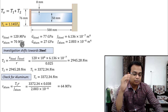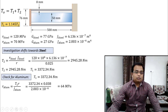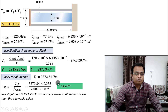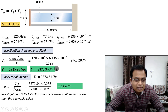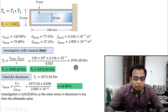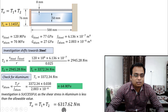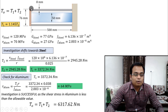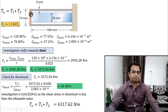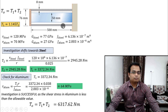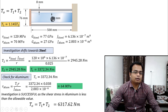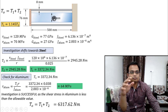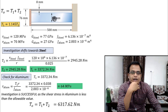64 MPa is less than the allowable 70 MPa for aluminum — accepted. So T1 = 3372 Nm and T2 = 2945 Nm. Adding them: T-naught = 3372 + 2945 = 6317 Nm. That is the maximum torque that can be applied to the disc. The shear stresses induced will be 64 MPa in the aluminum tube and 120 MPa in the solid steel shaft.